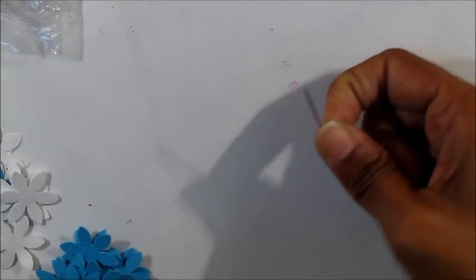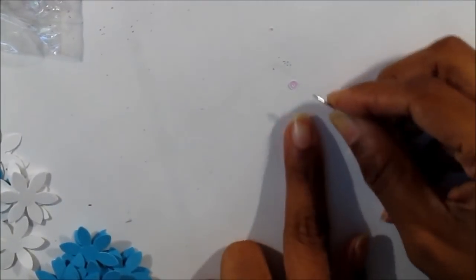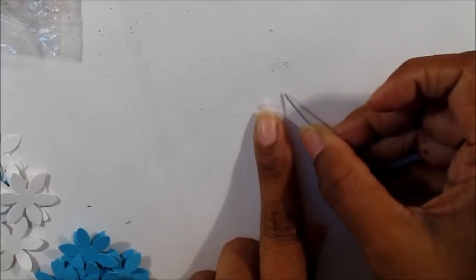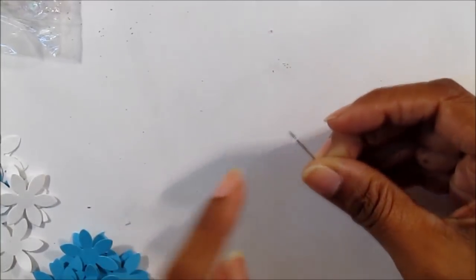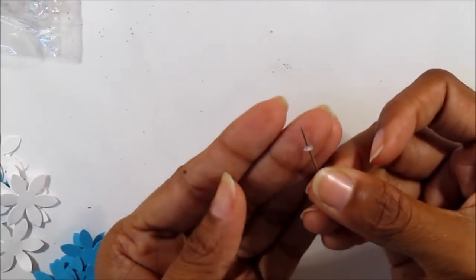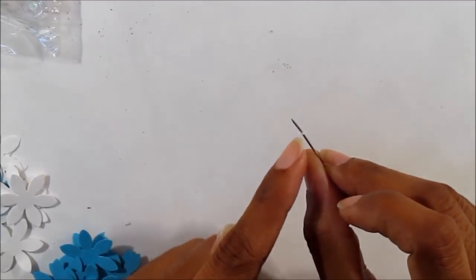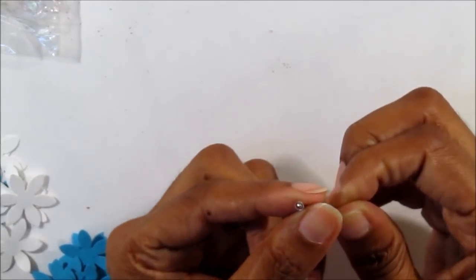Let's start by making a flower. What you would want to do first is pick up your alpen and carefully thread a sequin into it. Watch your fingers. This would form the center of the flower.